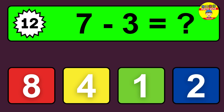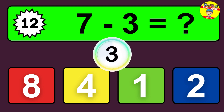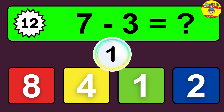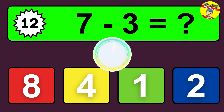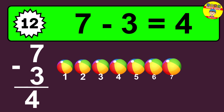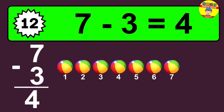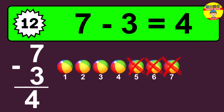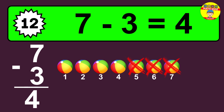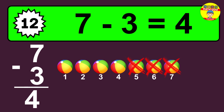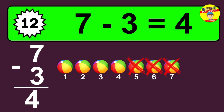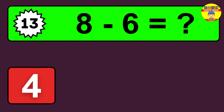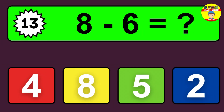Question 12. 7 minus 3 equals what? So the answer is 7 minus 3 is 4. Let's count it. 1, 2, 3, 4.